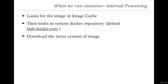Docker downloads the latest version of the image from hub.docker.com. If you have provided a specific version of the image inside the command, then Docker will download that specific version. If it finds the Docker image inside the image cache, then it will not go to hub.docker.com and will not download the latest or specified version of that image.